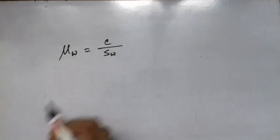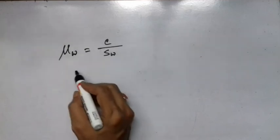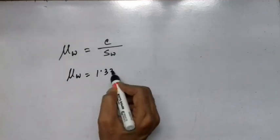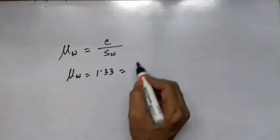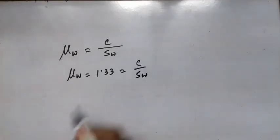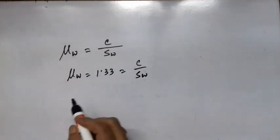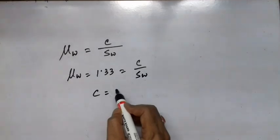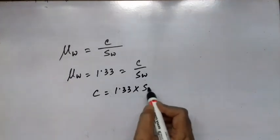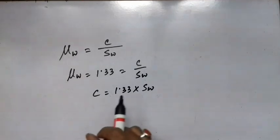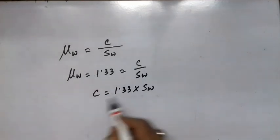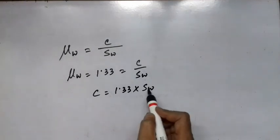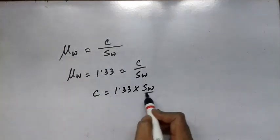If we are told that the refractive index of water is 1.33, it means the speed of light in vacuum divided by the speed of light in water equals 1.33. Therefore, the speed of light in vacuum is 1.33 times faster than the speed of light in water.